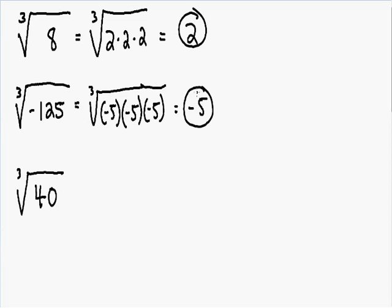These are really basic examples because they are perfect cubes, and notice how our answer is a nice whole number. Let's say we don't have a perfect cube. Let's say we have the cube root of 40. How do we solve this example?